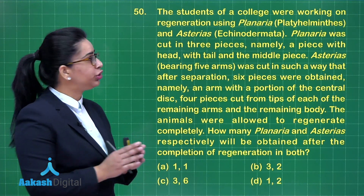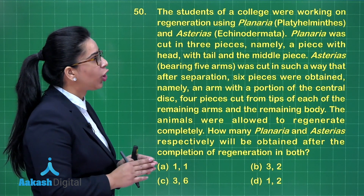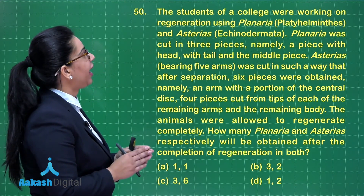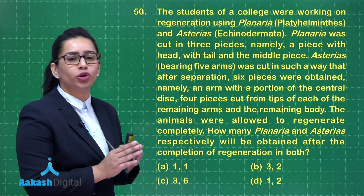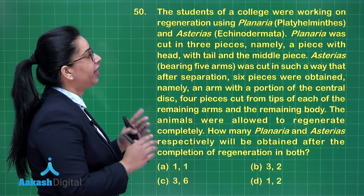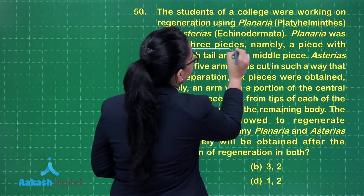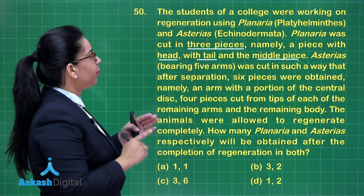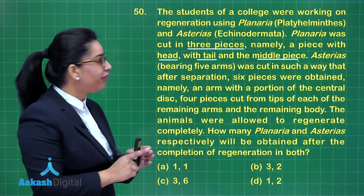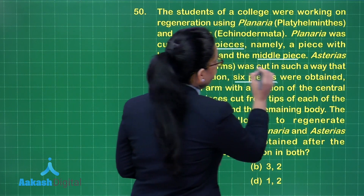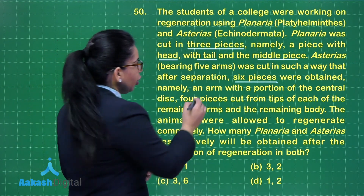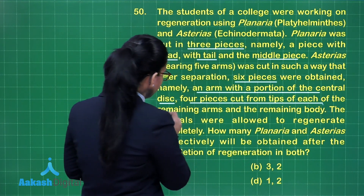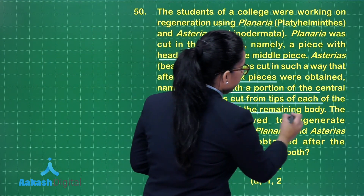Question number 50 asks us: the students of a college were working on regeneration using planaria. We know planaria is a platyhelminth and Asterias, which is a starfish, belongs to phylum Echinodermata. Planaria was cut in 3 pieces: a piece with head, one with tail, and a middle piece. Asterias bearing 5 arms was cut such that after separation 6 pieces were obtained — one arm with a portion of the central disc, and 4 pieces cut from the tips of each of the remaining arms, and the last is the remaining body.